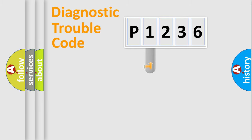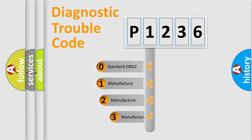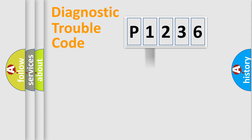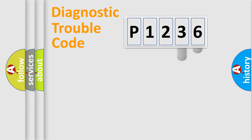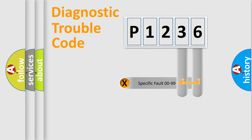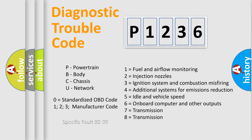This distribution is defined in the first character of the code. If the second character is expressed as zero, it is a standardized error. In the case of numbers 1, 2, or 3, it is a manufacturer-specific error. The third character specifies a subset of errors. This distribution is valid only for the standardized DTC code, and only the last two characters define the specific fault of the group. This division is valid only if the second character is expressed by the number zero.